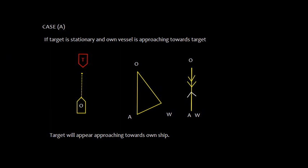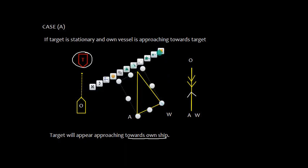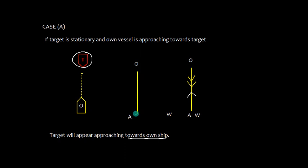To verify the OAW triangle, let's study Case A. Suppose the target is stationary and own vessel is approaching towards it. You will see that the target appears to be approaching towards own ship. In the OAW triangle, since the target is stationary, WA coincides — WA is represented by a double arrow. This gives us the relative approach OA, and WO is own ship's course and speed, moving towards the target.